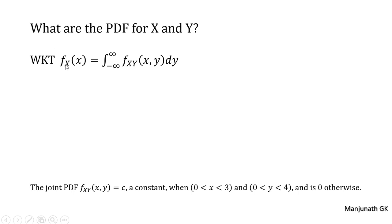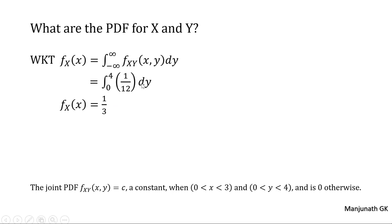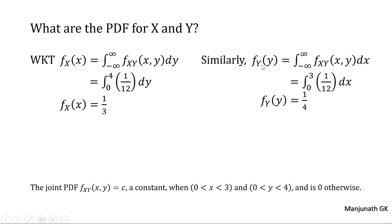Calculate the single random variable PDFs using the bivariate PDF. To find fx(x), integrate the bivariate PDF 1/12 with respect to dy, where y varies from 0 to 4. Integration of dy from 0 to 4 gives 4, so fx(x) = 4/12 = 1/3. To find fy(y), integrate the bivariate PDF 1/12 with respect to dx, where x varies from 0 to 3. Integration gives 3, so fy(y) = 3/12 = 1/4.